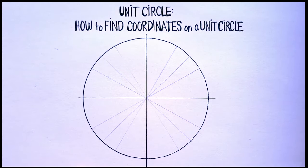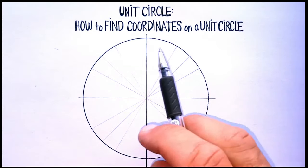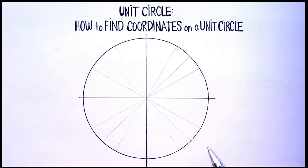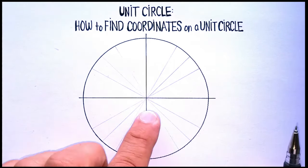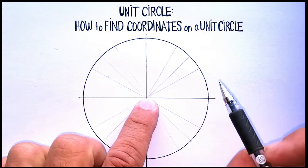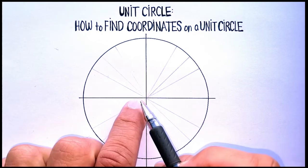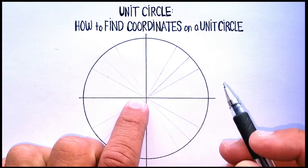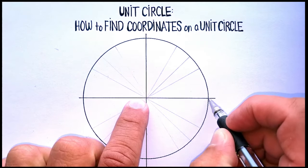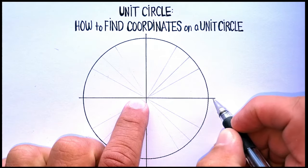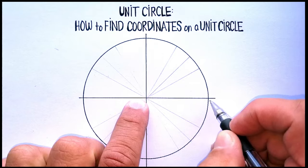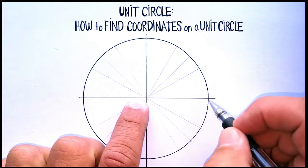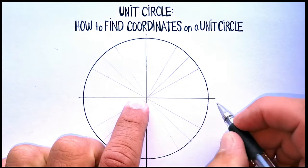In this video we're going to talk about how you find coordinates on the unit circle. A unit circle is a circle that has a radius of 1. So the coordinate here would be 1, 0 — 1 along the x, 0 along the y.